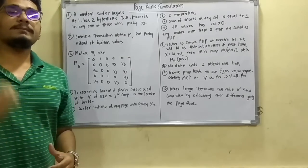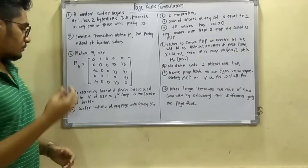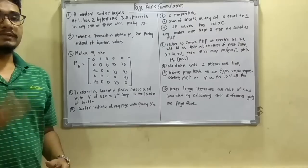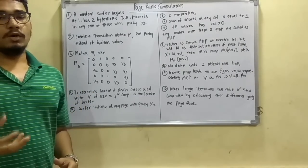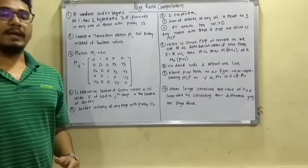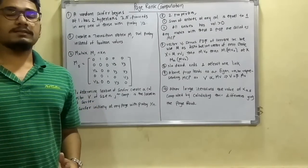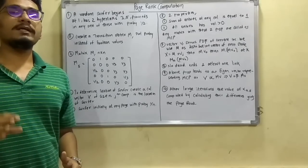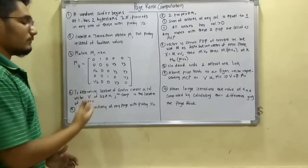In order to determine the position of the surfer — where he actually is at the current time — we create a column vector V of size N. We use the J-th component of this vector V to identify the actual location of the surfer. Initially, we assign the surfer any probability of 1 by N, where N is the size of the vector we are defining.